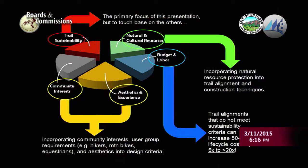The budget and labor aspect is very significant. When we do sustainable trail design and construction, we end up with a product that will cost up to 5 to 20 times less over a 50-year lifespan than non-sustainable trail alignments. Community interests and aesthetics are closely related — incorporating community perspectives to meet the needs of users, whether hikers, mountain bikers, or equestrians, and thinking of aesthetic aspects in the design process as well.